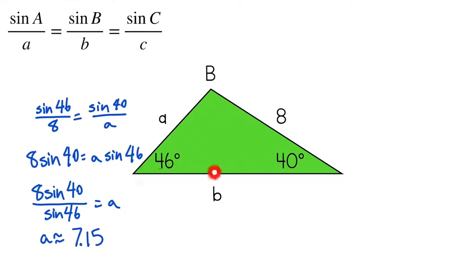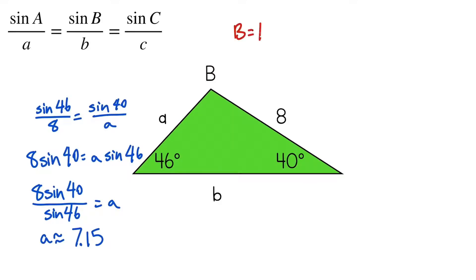Now I know side A, and I want to find side B. But first I need to set up the ratio, so I have to know the angle opposite of side B. That's pretty simple because we know these two angles and a triangle has to equal 180 degrees. So angle B is equal to 180 minus 40 minus 46, which is 94 degrees.